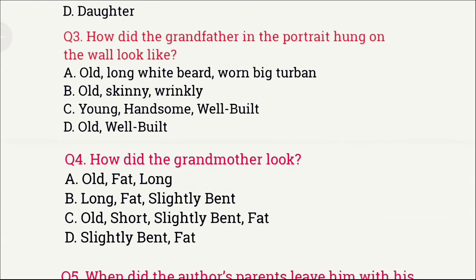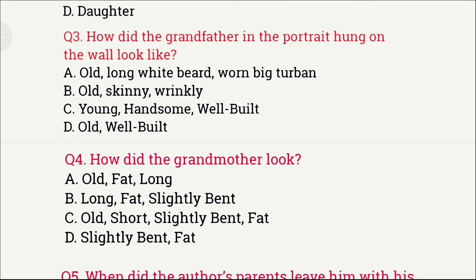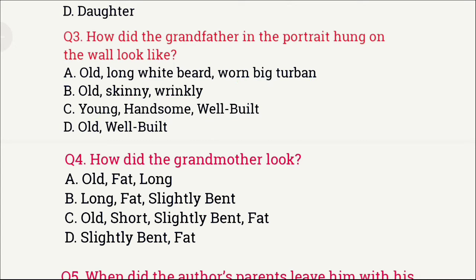Question number 3: How did the grandfather in the portrait hung on the wall look like? The options are: A) Old, long white beard and big turban, B) Old, skinny and wrinkly, C) Young, handsome and well-built, and D) Old and well-built. The right answer is option A, which is old, long white beard and big turban.